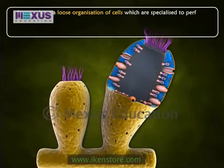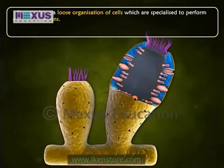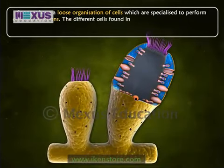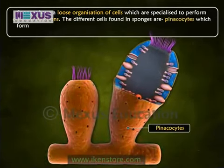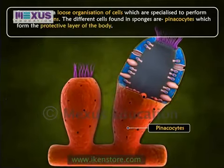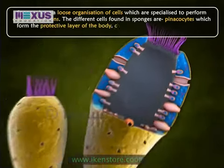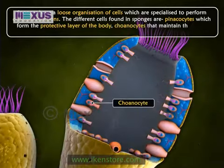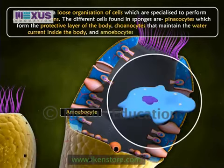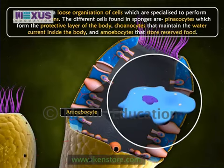The different cells found in sponges are pinacocytes, which form the protective layer of the body; choanocytes, that maintain the water current inside the body; and amoebocytes, which store reserved food.